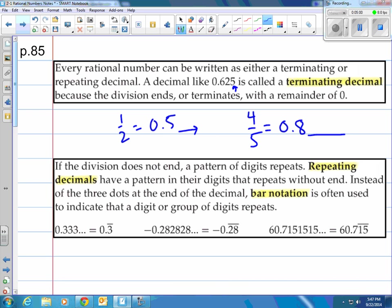If the division does not end, a pattern of digits repeats. Repeating decimals have a pattern in their digits that repeats without end. Instead of the three dots at the end of the decimal, bar notation is used to indicate that a digit or group of digits repeats. So instead of writing 0.3333 keep going on or use dots, we use this bar notation. The three is the thing that's repeating, so we put a bar over it. Same with negative 0.282828 and on and on. The 28 is actually being repeated. Sometimes the bar doesn't start at the decimal point. The 15 is the thing that's repeating, so put a bar just over the 15 part.